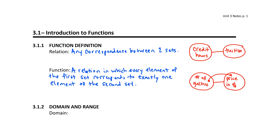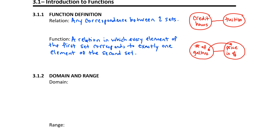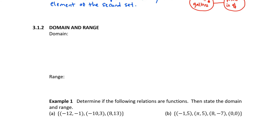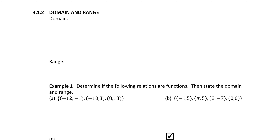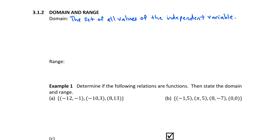We're talking about two sets. Both relations and functions have a first and a second set, and we have specific names for these sets. Those are domain and range. In Section 3.1.2, we will define the domain and the range. The domain is the set of all values of the independent variable, generally represented by x, and we can think of this as the input to the function.